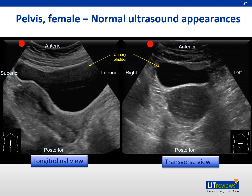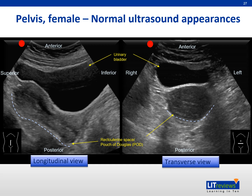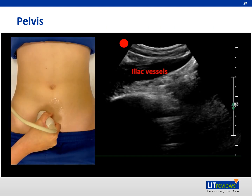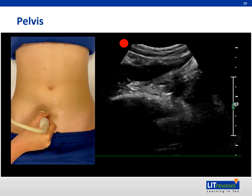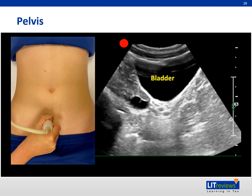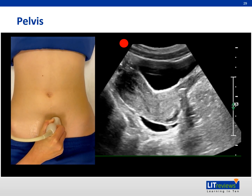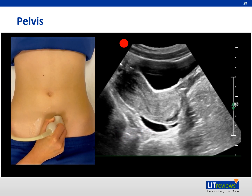Here are normal images of a female pelvis. Free fluid, if present, will accumulate posterior to the uterus in the pouch of Douglas. As more fluid accumulates, it can also be seen anterior to the uterus, occupying the uterovesical space. In males, free fluid can be seen in the retrovesical space. This video shows the pelvis in a sagittal plane — the probe is fanned from right to the midline and to the left. Pay attention to the retrovesical space where fluid usually accumulates.